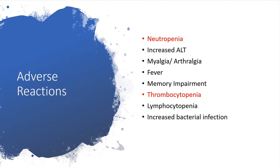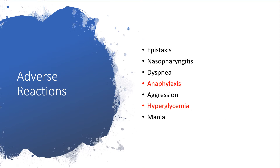Further adverse reactions include thrombocytopenia, on account of which the individual could start bleeding, lymphocytopenia, and increased bacterial infections. Other reactions could include epistaxis — remember someone with thrombocytopenia, we would expect epistaxis. Also angiolitis, dyspnea, lymphadenitis. Hyperglycemia can occur, so if someone is diabetic and on PEG interferon alpha 2a, keep an eye on the glucose. Mania is also a noted adverse reaction.